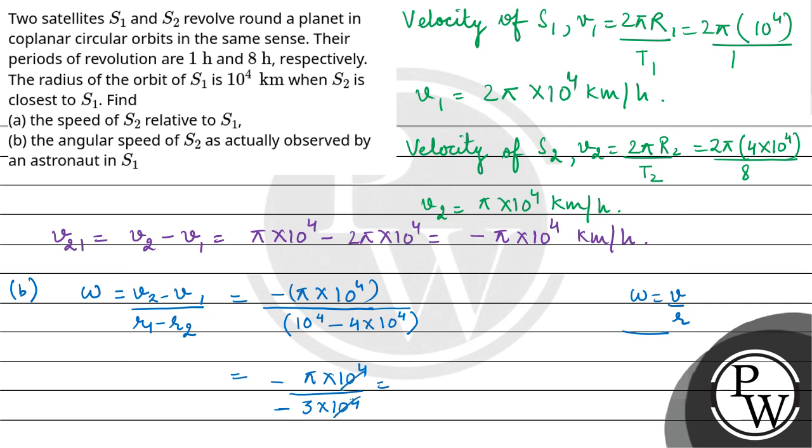This simplifies to ω = π/3 radians per hour. This is our angular speed of S2 as observed by an astronaut on S1. I hope you understood it well, best of luck.